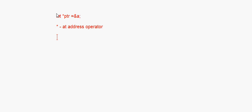Declaration and initialization can also be done on the same line — for example, you can write 'int *ptr = &a'. The * operator used here is called the 'at address' operator, and the & operator is called the 'address of' operator.